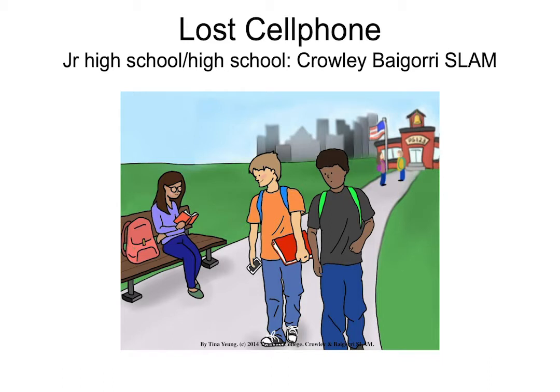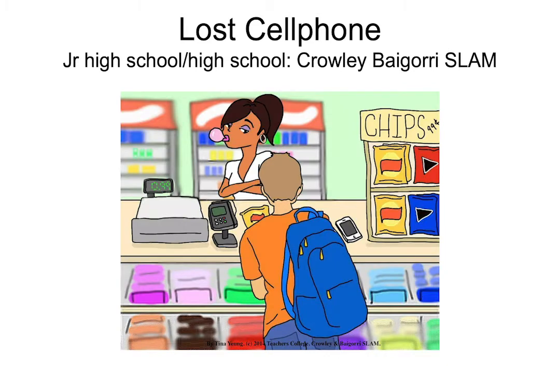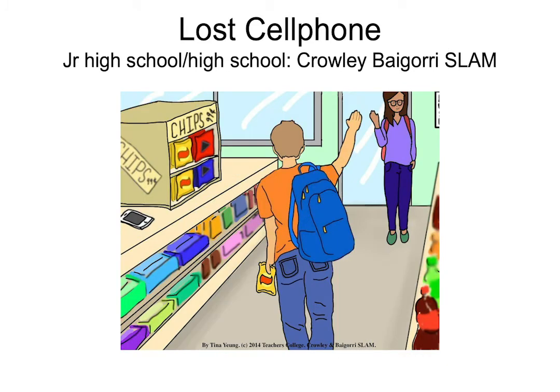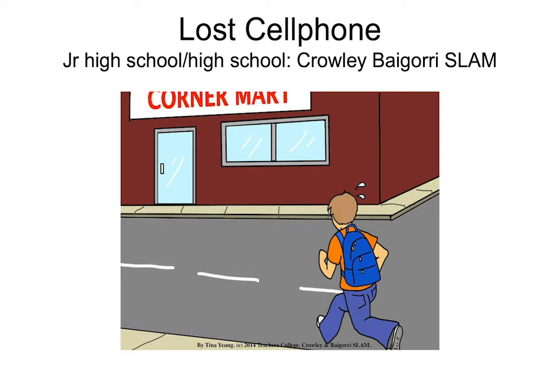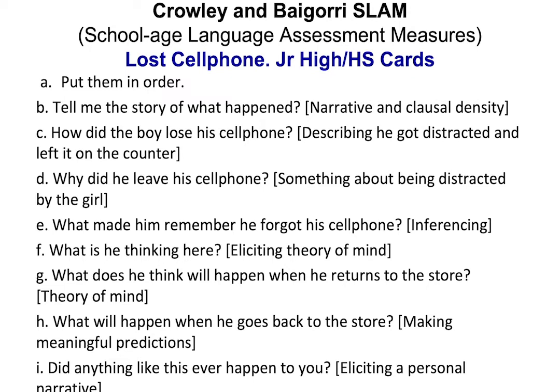For late elementary through high school, we have Lost Cell Phone. He sees a girl, gets chips, gets distracted, his phone is there, he remembers he doesn't have his phone, checks his pockets, and goes rushing back to the store. Questions include: 'Did anything like this ever happen to you?' 'What will happen when he goes back to the store?' — making meaningful predictions. 'What does he think will happen?' — theory of mind. 'What made him remember?' These cover expository language, persuasive language, cohesion — temporal and referential — theory of mind, perspective-taking, social pragmatic language, false beliefs, inferences, and causal cohesion.